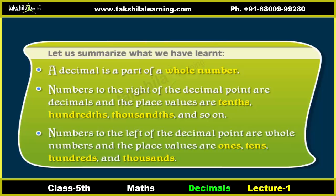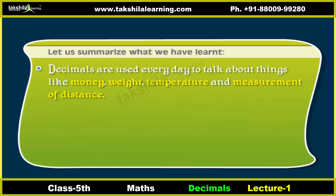Numbers to the left of the decimal point are whole numbers, and the place values are ones, tens, hundreds, and thousands. Decimals are used every day to talk about things like money, weight, temperature, and measurement of distance.